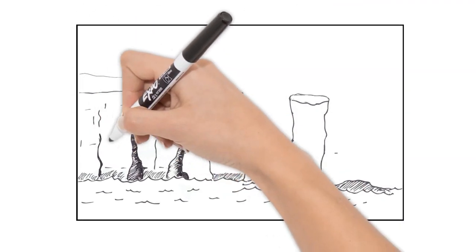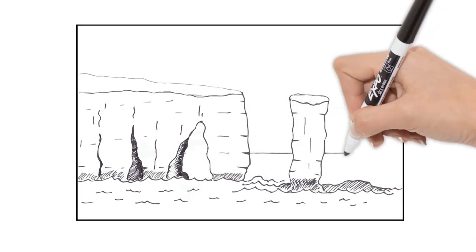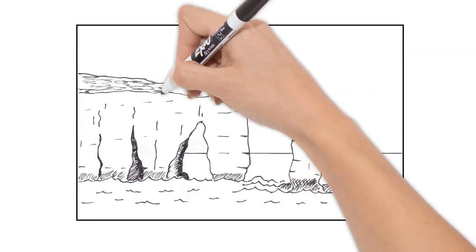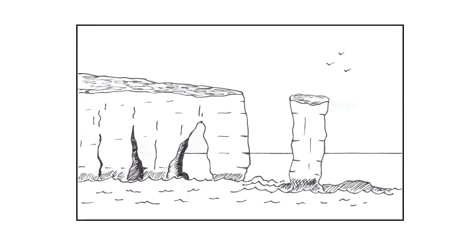Let's draw in some joints and some bedding planes onto the rock and put in the horizon, including the bit we can see through the cave. A bit of shading on the top just to show some texture and some seabirds.